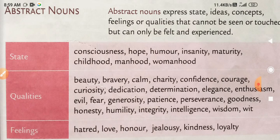So, state में क्या-क्या है, देखिए — consciousness, hope, humor, insanity, maturity, childhood, manhood, womanhood. यह सारी चीज़ें state में आती हैं.